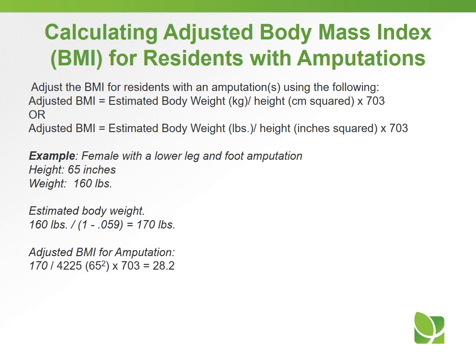You can see the calculation for adjusting the BMI for residents with an amputation using the following formulas: adjusted BMI equals estimated body weight in kilograms divided by height in centimeters squared, multiplied by 703; or adjusted BMI equals estimated body weight in pounds divided by height in inches squared, times 703. An example is shown here with a female, 65 inches tall, weighing 160 pounds.